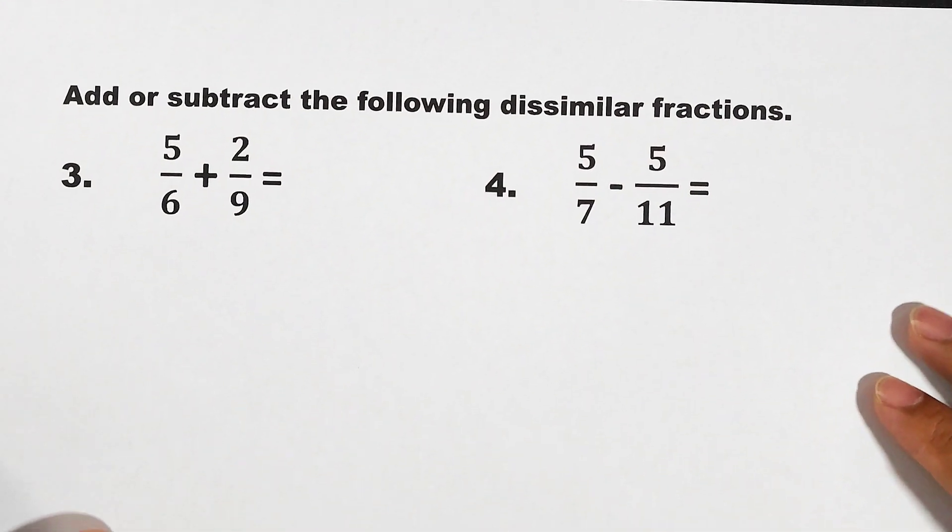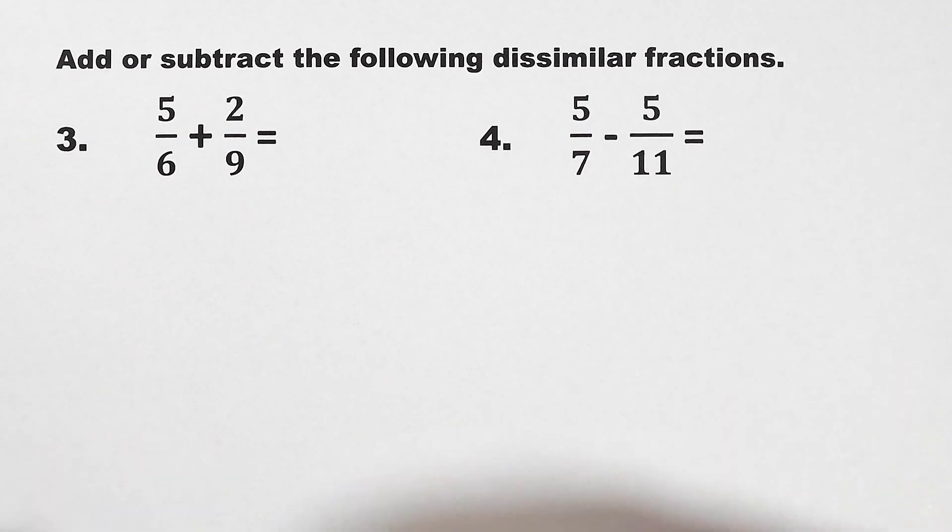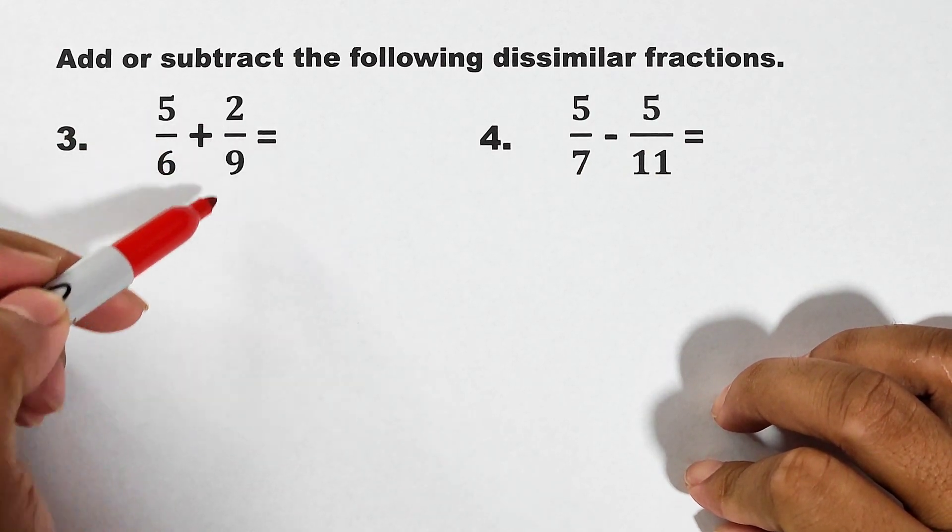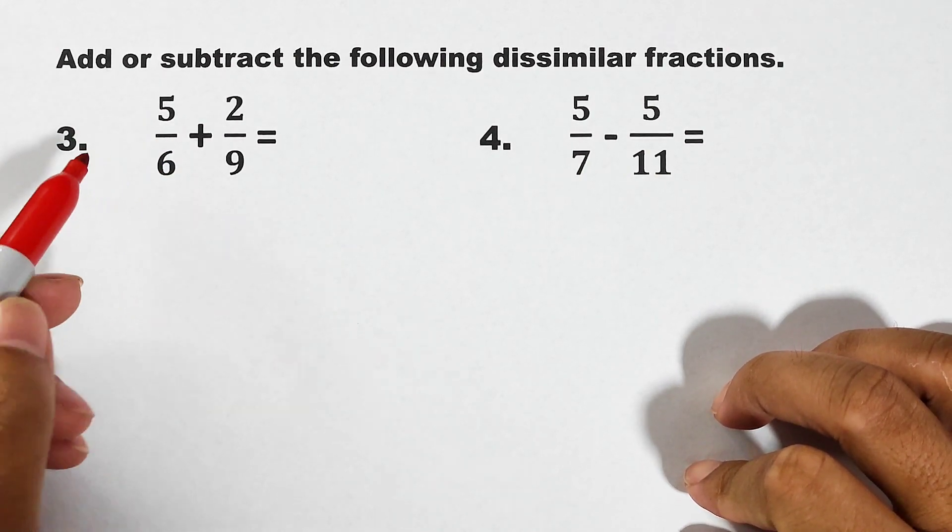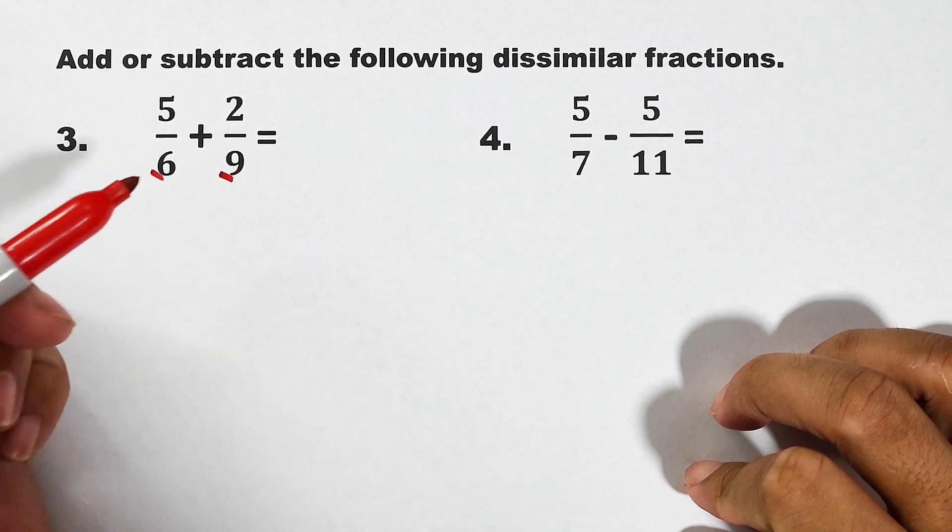So let's move on with item number 3. Now for number 3, I will allow you to do it first. You can pause the video for a while and try item number 3. Okay, let's continue. So here, we have 5 over 6 plus 2 over 9. Our denominators are 6 and 9.